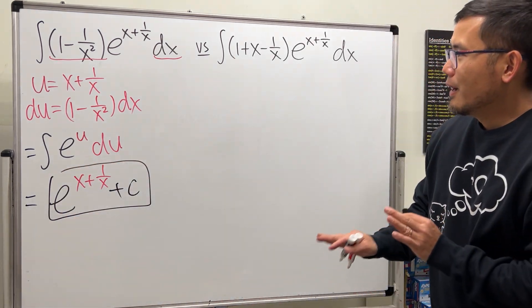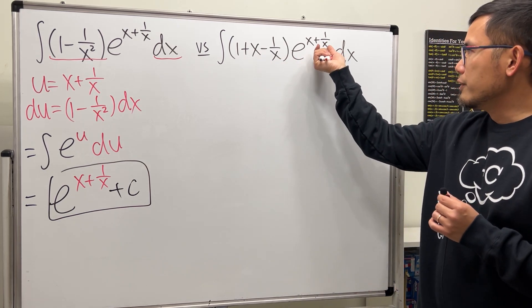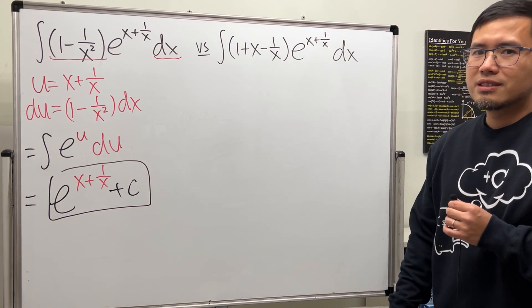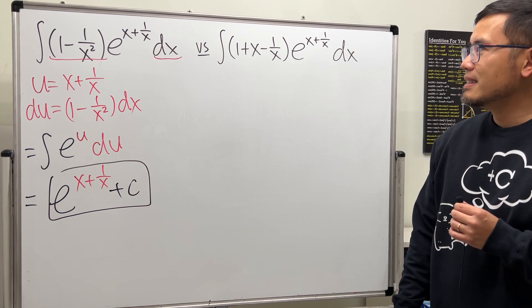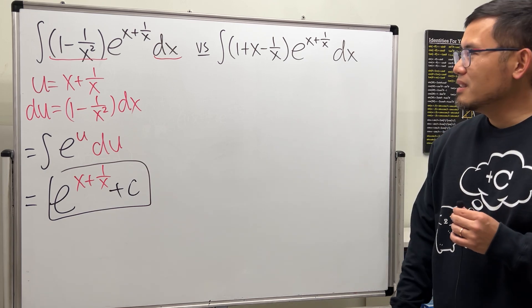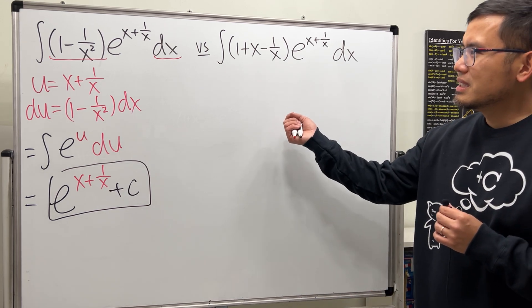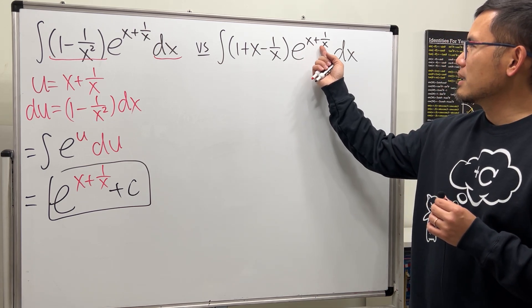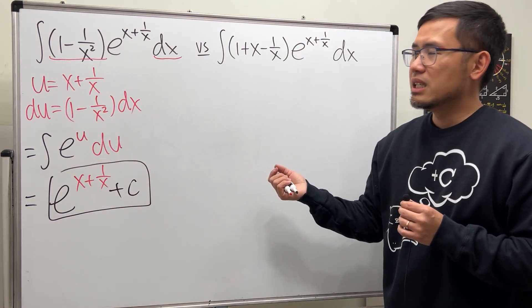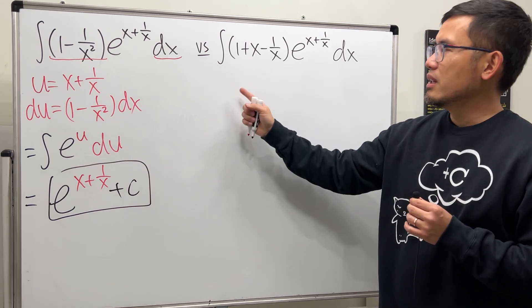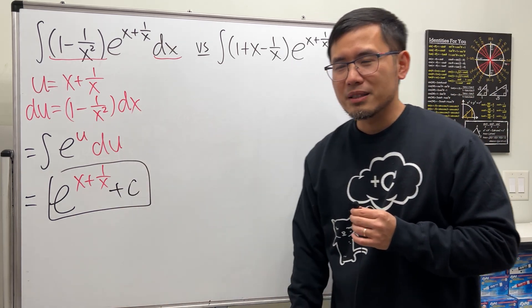Plus C. Alright, now this right here is trickier because of course this is not the derivative of that. So what do we do? Any suggestions? Integration by parts, maybe? You could. But wouldn't it be nice if we can somehow squeeze out the derivative of x + 1/x? Right? If we can somehow squeeze out the 1 - 1/x² that would be kind of nice, right?